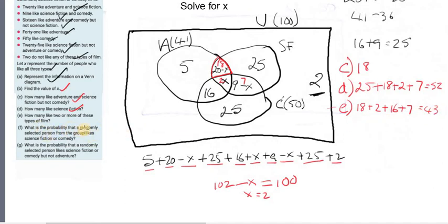What's the probability that a randomly selected person from the group like science fiction or comedy? Now that means you're talking with someone who likes this circle, or this circle. So it's everybody, actually. You could add all these up if you like, 25 and 18 and 2 and 7 and 16 and 25. Or you could just say, it's not these two, is it? It's not 5 and it's not 2. Everyone else likes science fiction or comedy. So F is going to be 100 minus 7, which is 93.